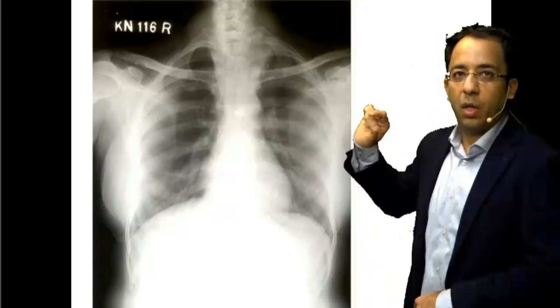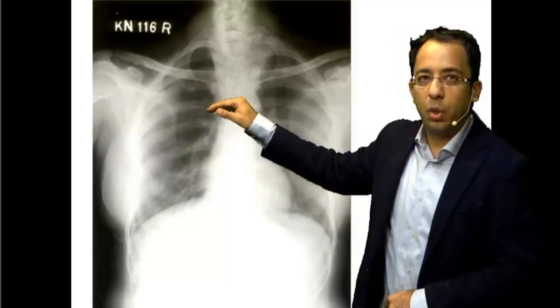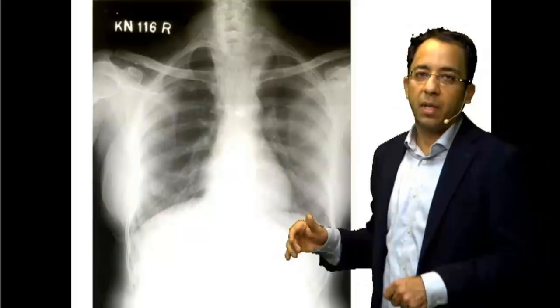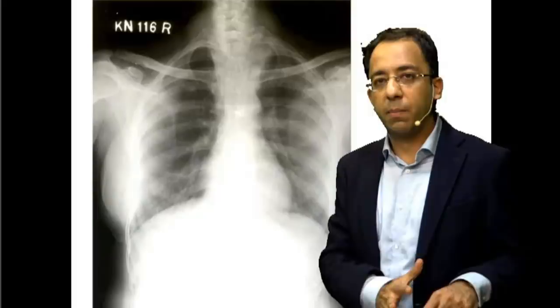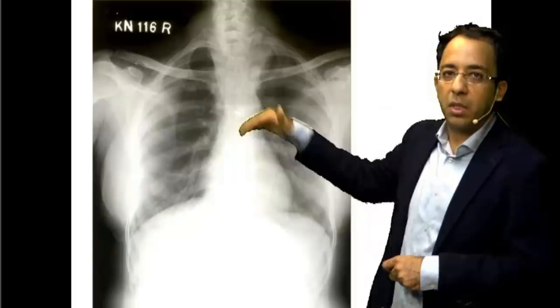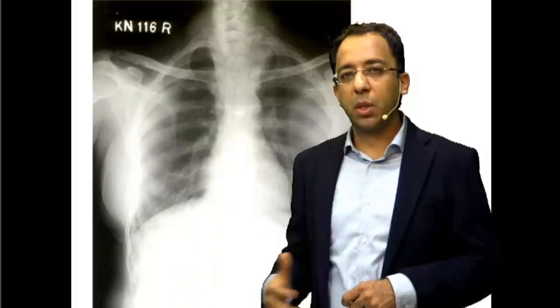Whenever you look at an X-ray finding like this, you need to look at the clavicles. You can clearly see the disease is extending over the clavicles — the mediastinal lesion is present above the clavicle as well. If it is present above the clavicle, it has to be in the posterior mediastinum. This is called the cervical thoracic sign. If it were an anterior mediastinal lesion, it would stop at the clavicle. A clear superior margin above the clavicle indicates a posterior mediastinal lesion.